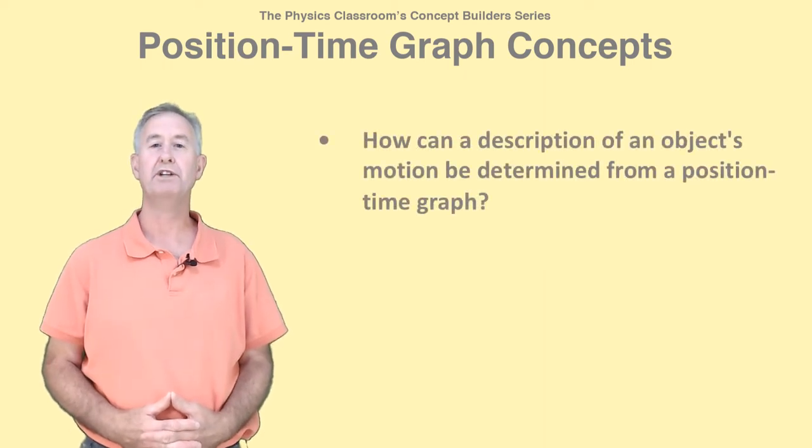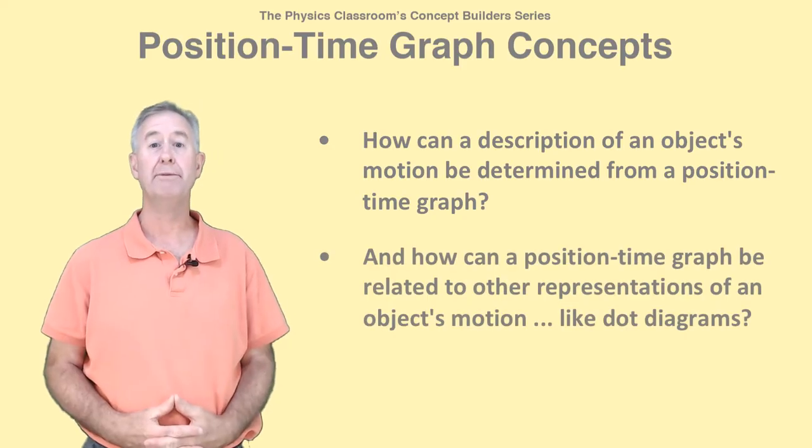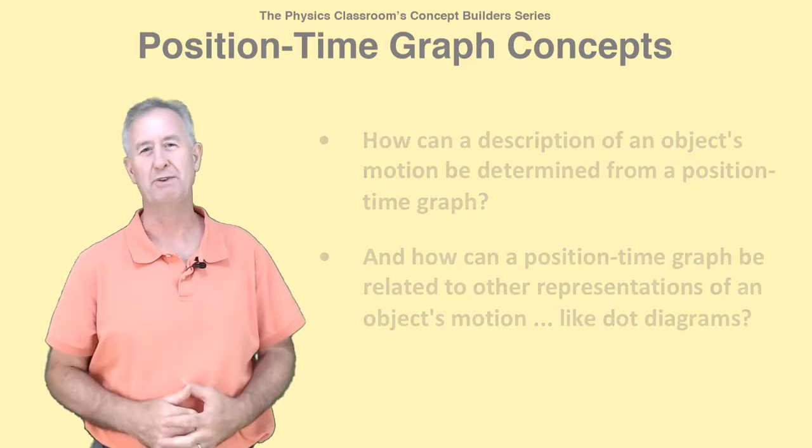How can the description of an object's motion be determined from a position-time graph? And how can a position-time graph be related to other representations of an object's motion, like dot diagrams? Well, I'm Mr. H, and I have some answers for you.